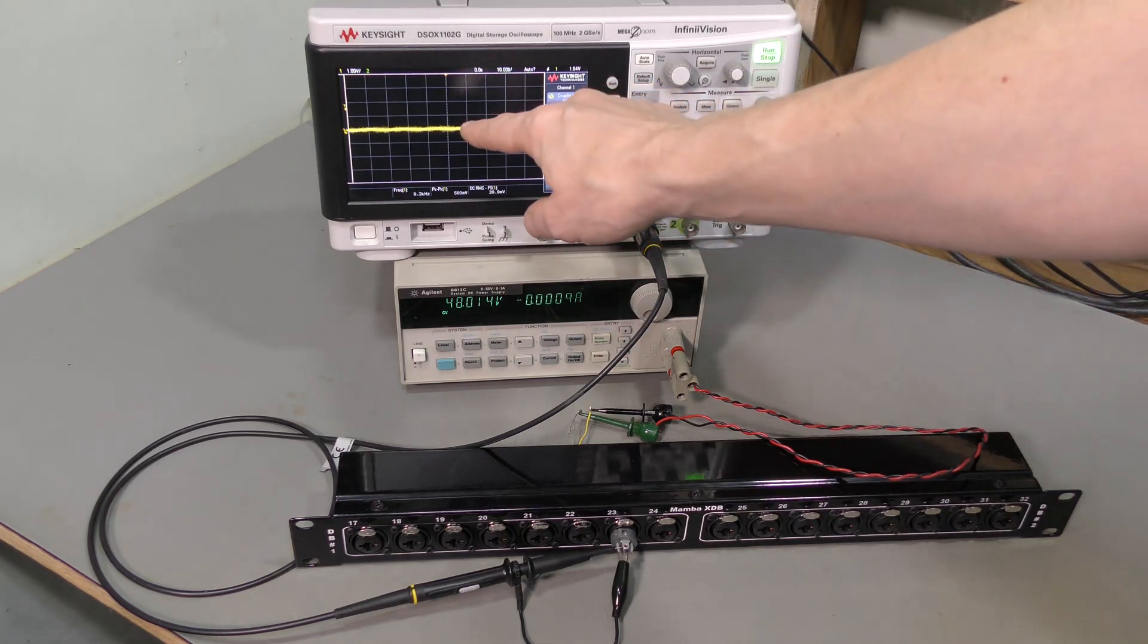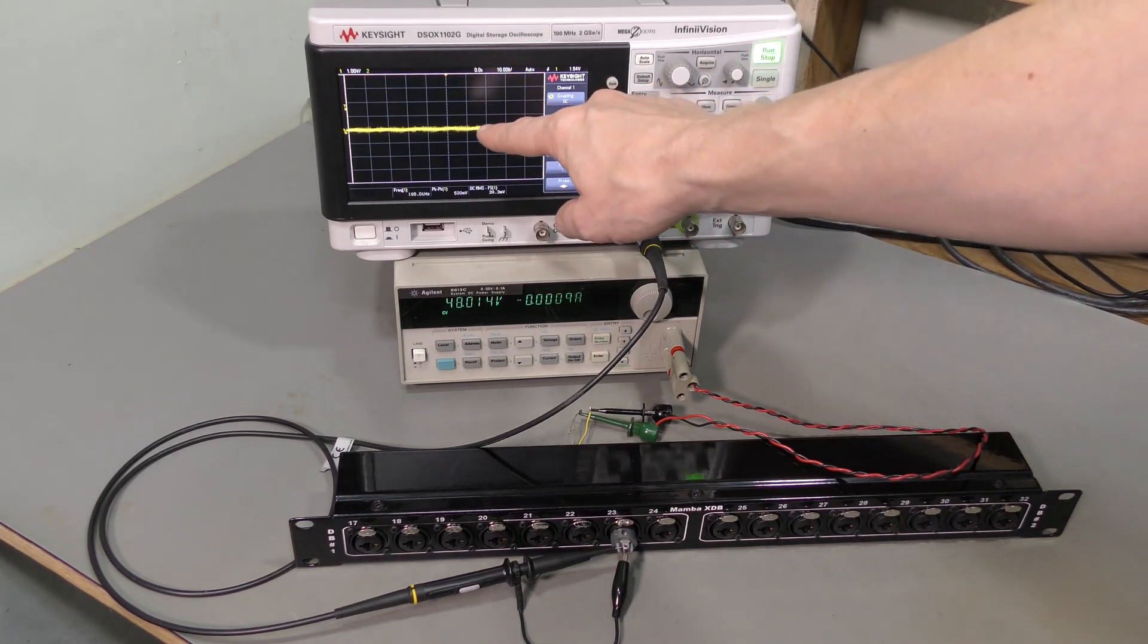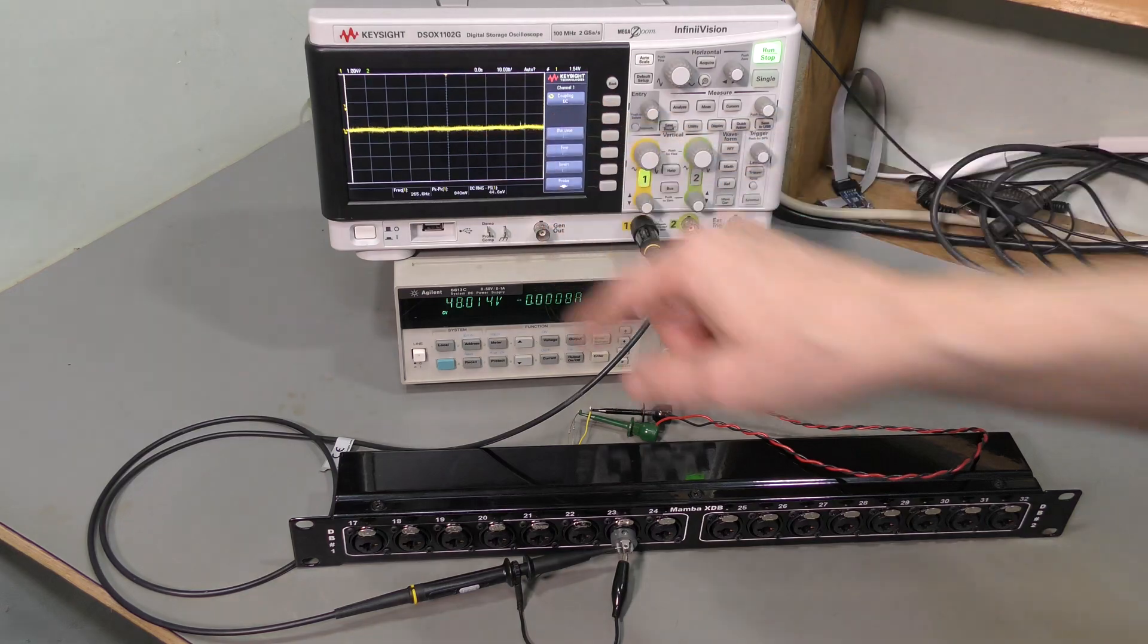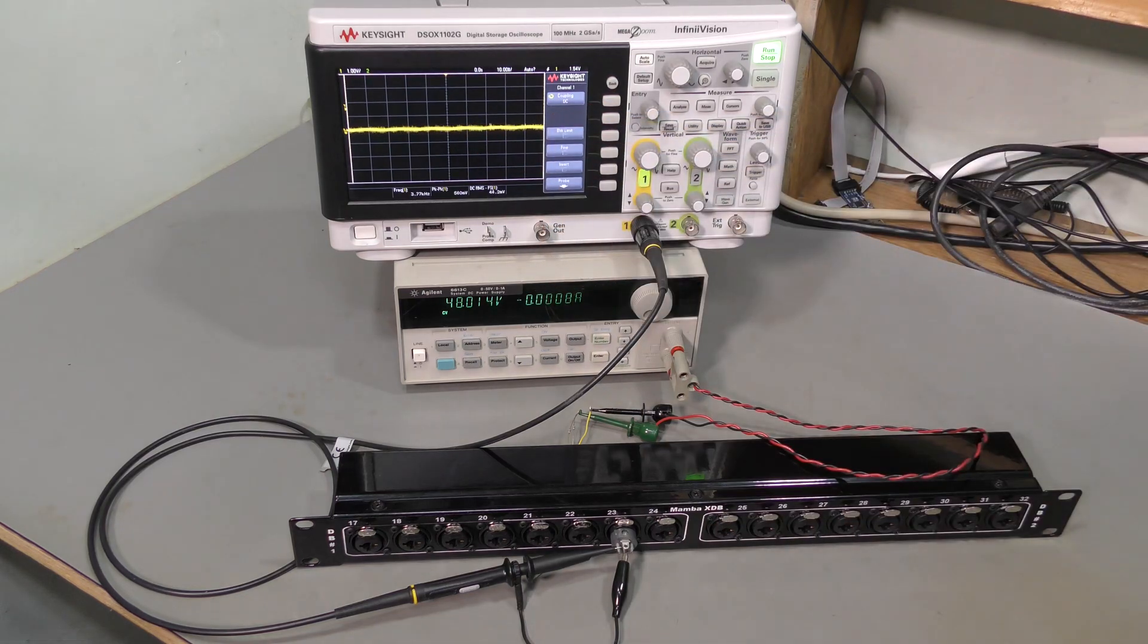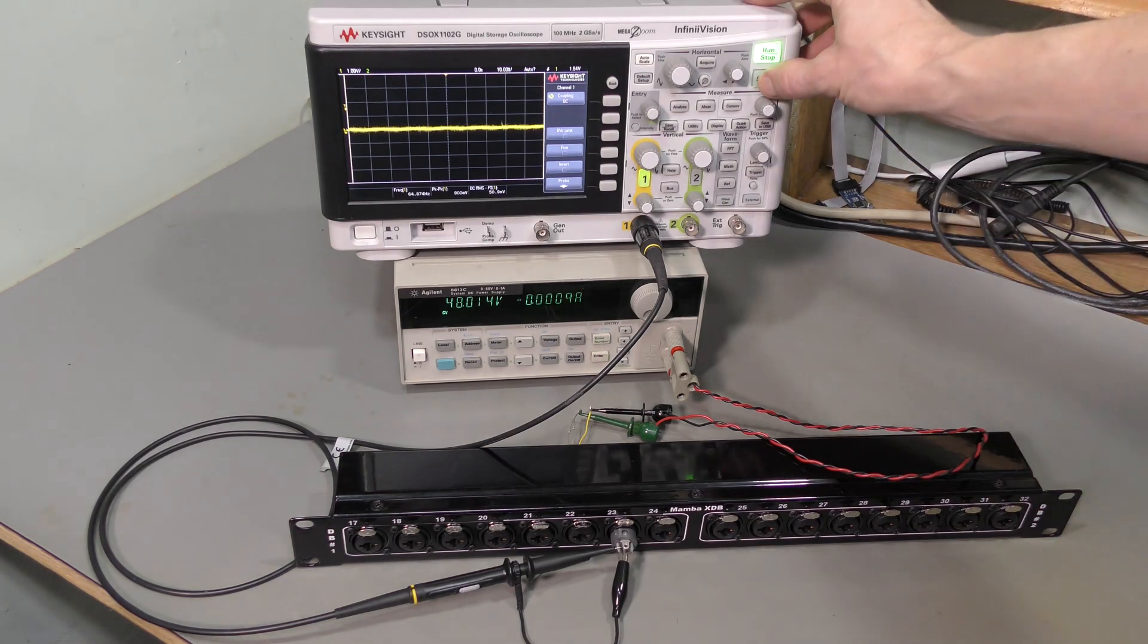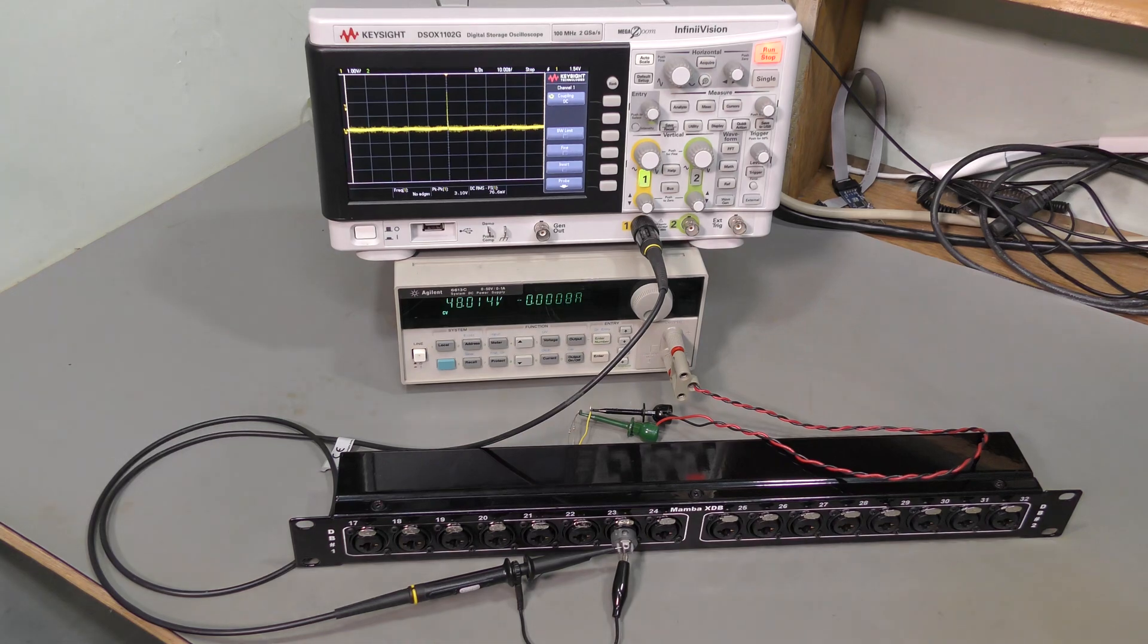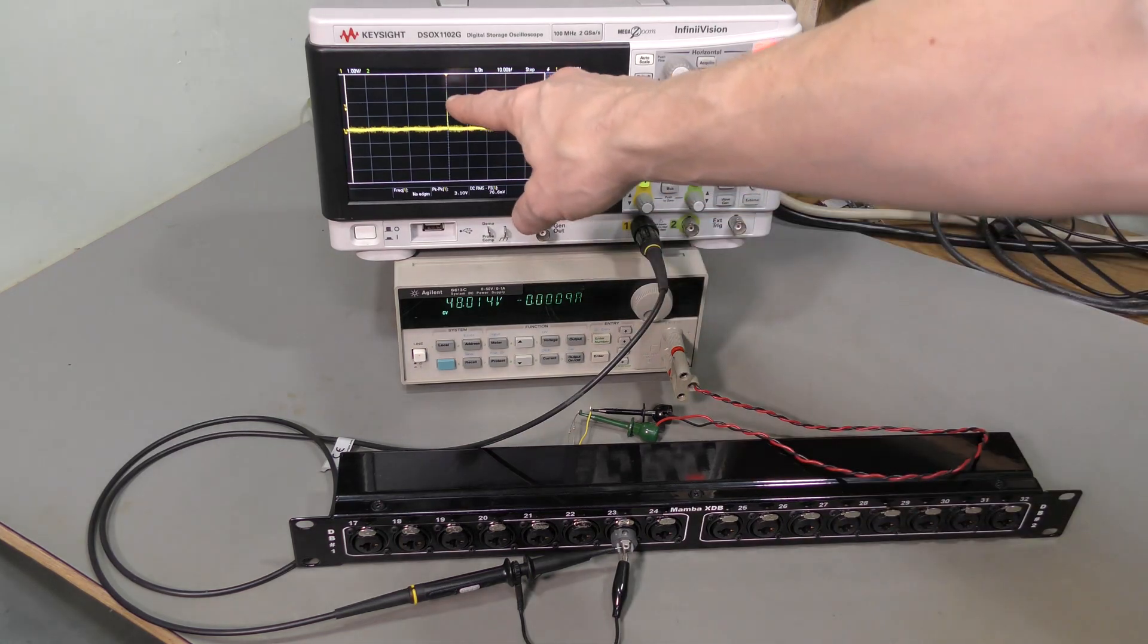So, we should see nothing at all across the differential pair, but look at this. Perhaps we can try single capture that. There you go, one more time. We have one volt per division here, so this spike is about 3 volts.